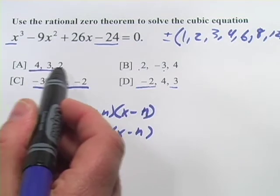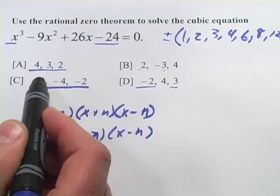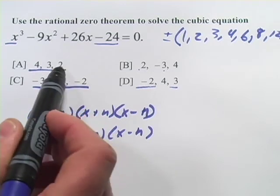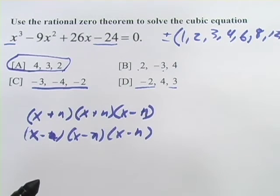If you look at this one, since it's reversed, these would be all negative. So x minus 4, x minus 3, x minus 2. That is the only one that could come out to a negative 24. So that's going to be our answer.